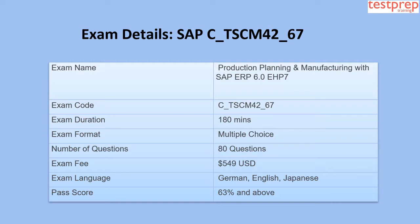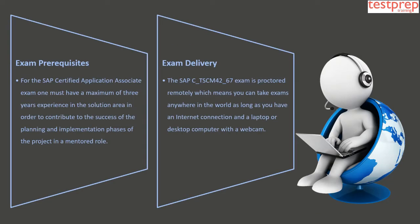Exam details: the exam name is Production Planning and Manufacturing with SAP ERP 6.0 EHP 7. The exam code is C_TSCM42_67. The exam duration is 180 minutes. The format is multiple choice with 80 questions. The exam fee is $549.